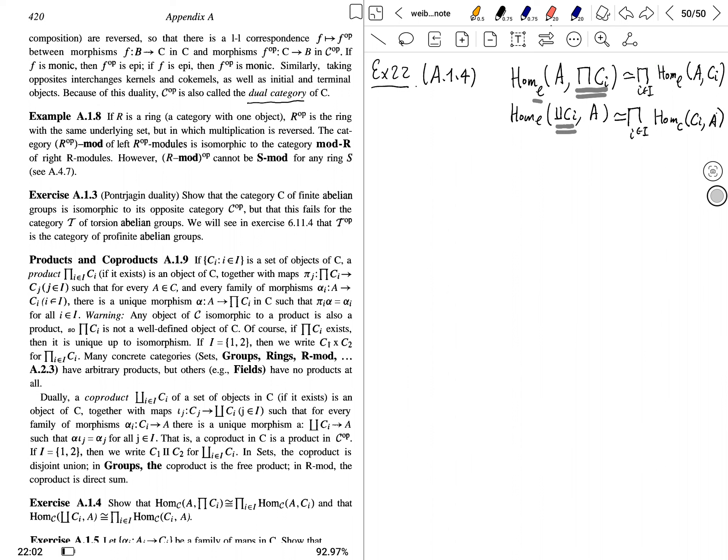So here is what we know. This is product. And this is product in the category of a set. It's the product of homset. So it's product of sets. It's Cartesian product.